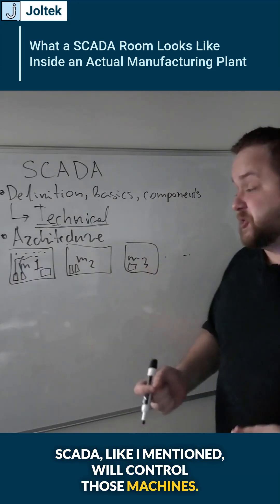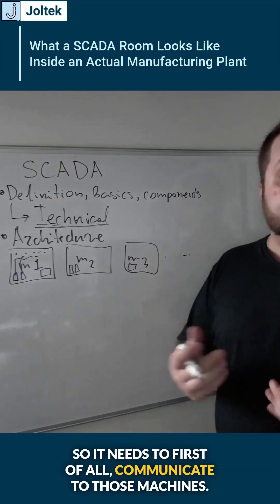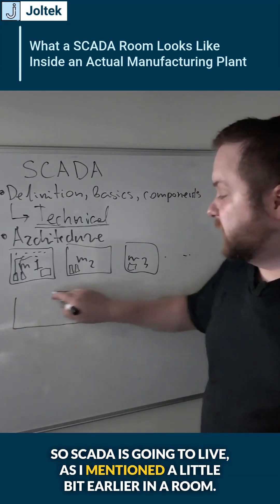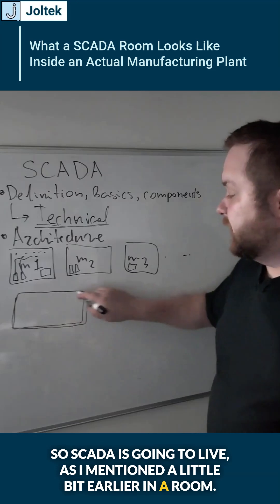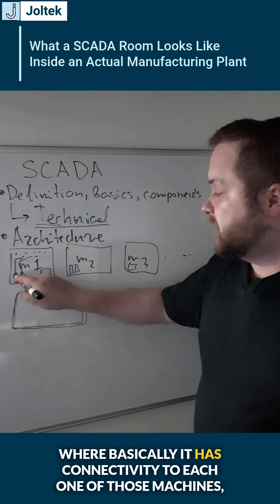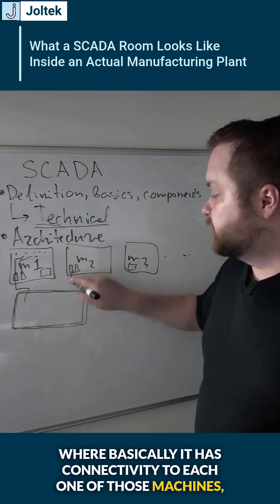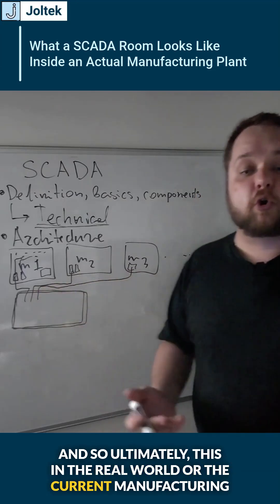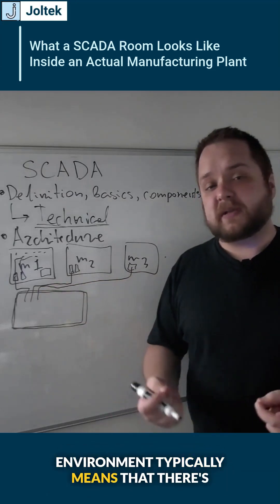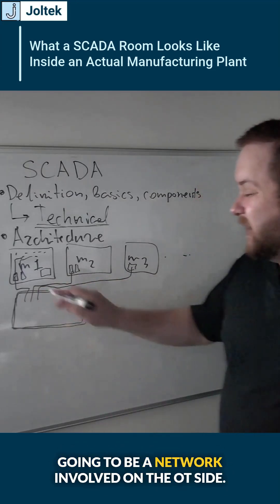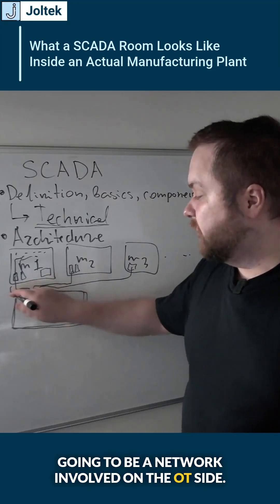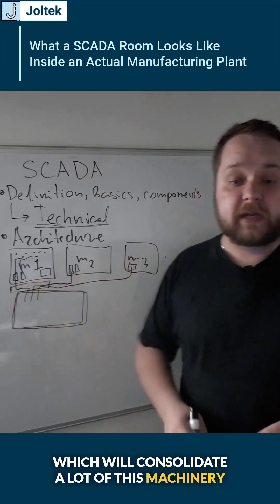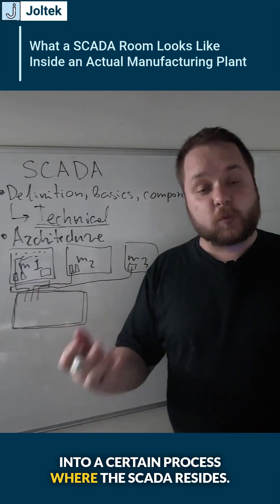SCADA will control those machines, so it needs to first of all communicate to those machines. SCADA is going to live in a room where it has connectivity to each one of those machines. Ultimately, in the real world or the current manufacturing environment, this typically means there's going to be a network involved on the OT side, which will consolidate a lot of this machinery into a certain process where the SCADA resides.